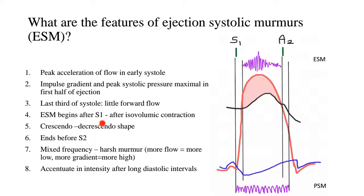The ESM begins after S1; in fact, it begins after the isovolumic contraction phase, so there is a little bit of gap between S1 and the ESM. The shape of the ejection systolic murmur is crescendo-decrescendo, and it is maximum in the early to mid part of systole. Another name for ESM is also mid-systolic murmur. Notably, this ESM ends before S2.